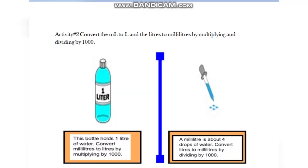In activity 2, you want to convert the milliliters to liters and the liters to milliliters by multiplying and dividing by 1000.